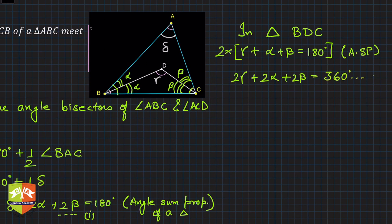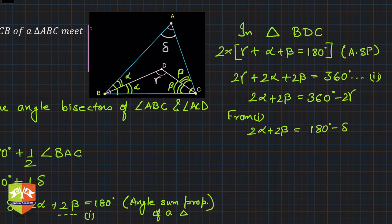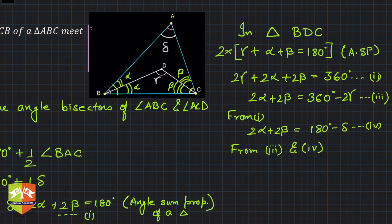From equation 2: 2α plus 2β equals 360 degrees minus 2γ — call this equation 3. From equation 1: 2α plus 2β equals 180 degrees minus δ — call this equation 4. Since the left-hand sides of equations 3 and 4 are the same, we can equate the right-hand sides: 360 degrees minus 2γ equals 180 degrees minus δ.